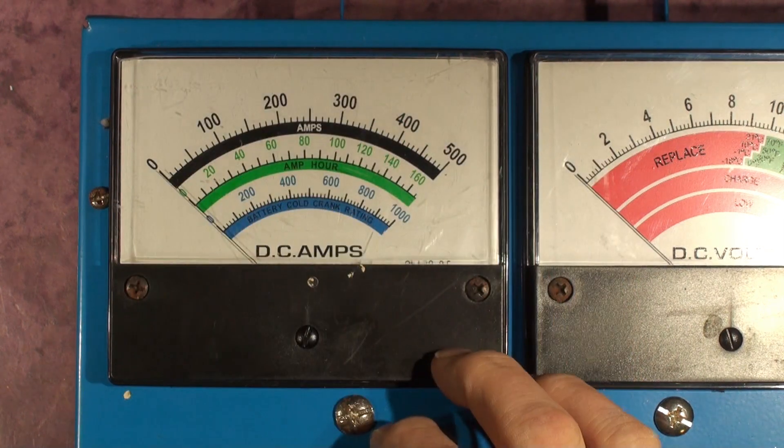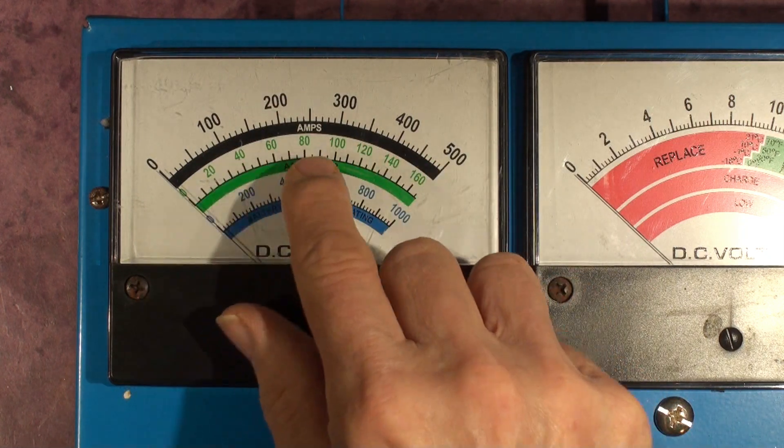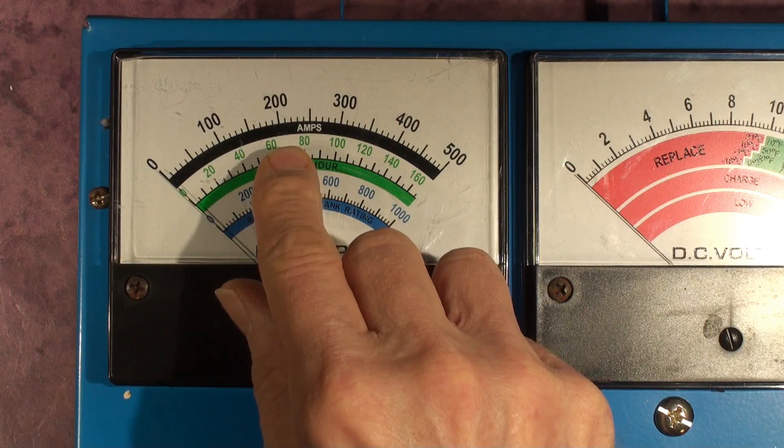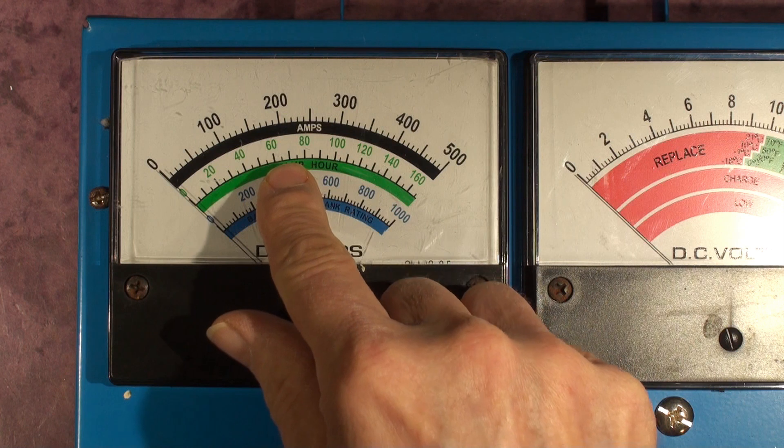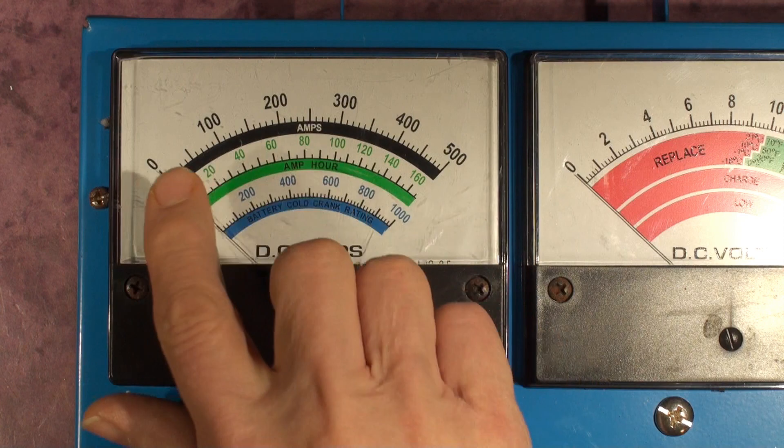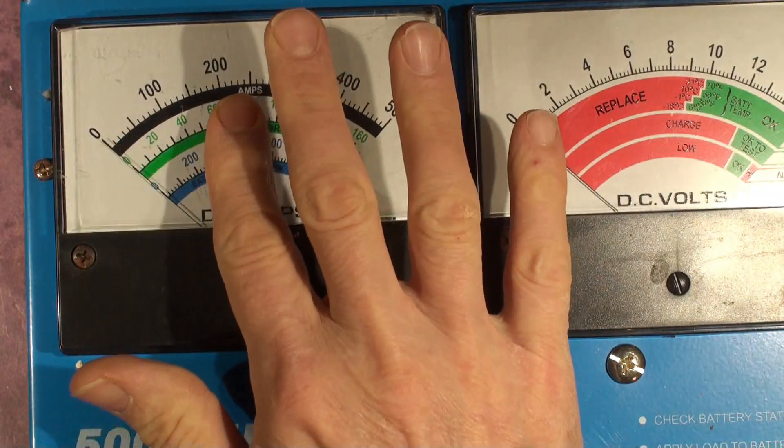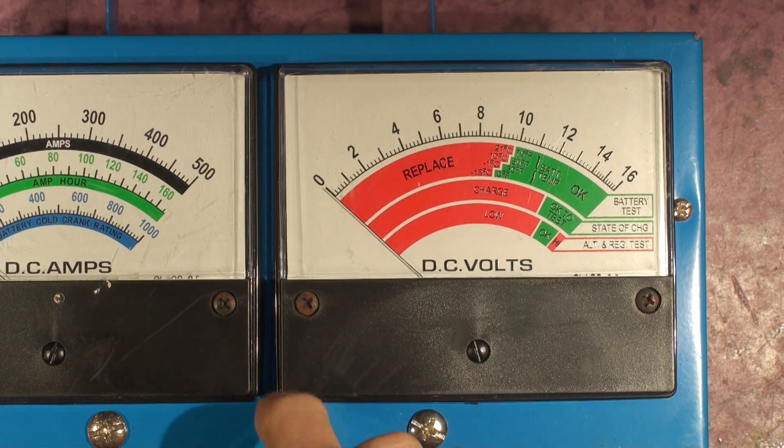The first step is to look and see what battery you've got and then work out how far you're going to wind this up, because you can't really do the test unless you know how far you're going to go with it. You just can't keep on winding because you might accidentally fail your battery even though it's probably okay.